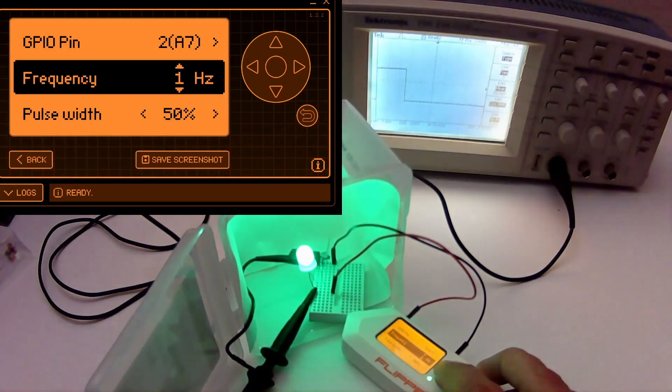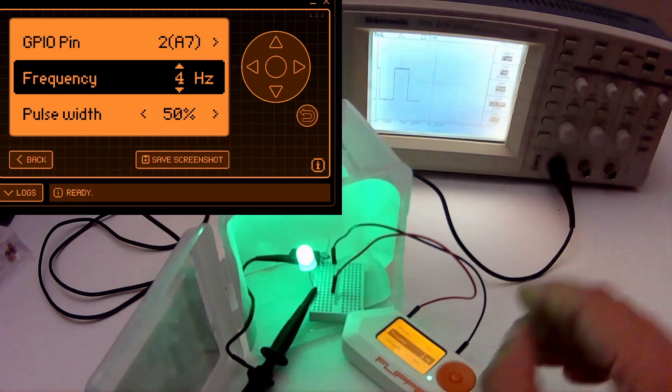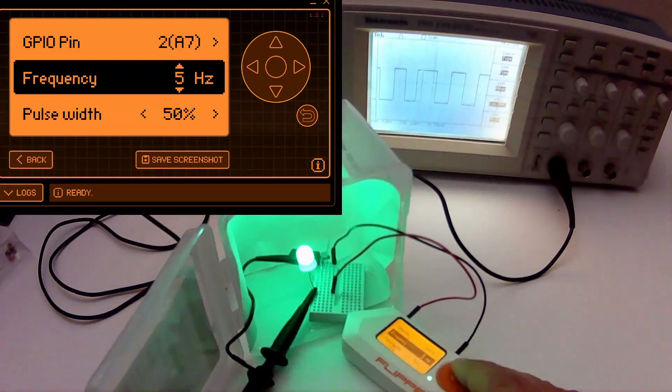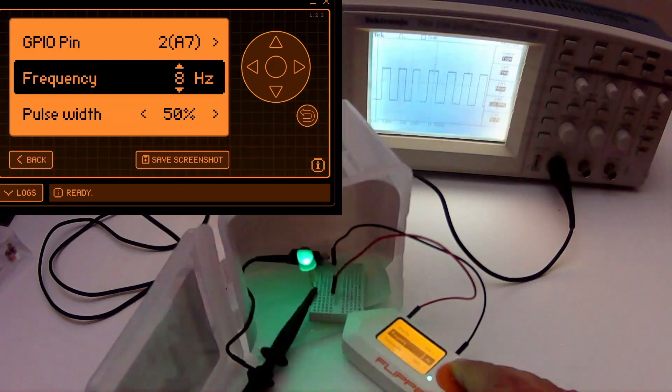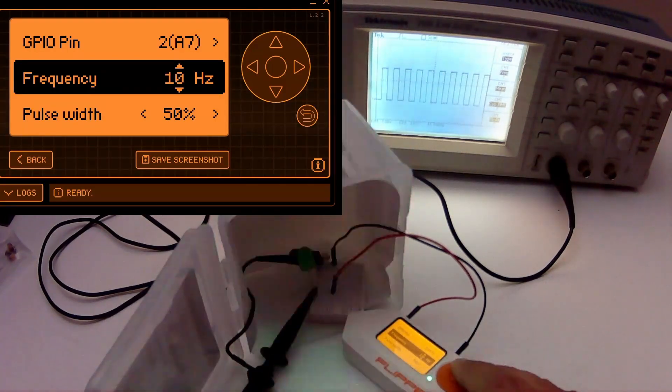And now we'll increase our frequency. So we're at two, three, now we're at four times a second. Now we're blinking 10 times a second.